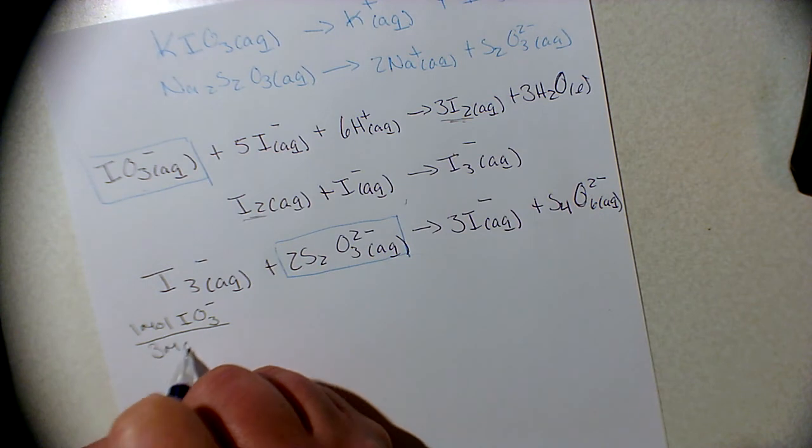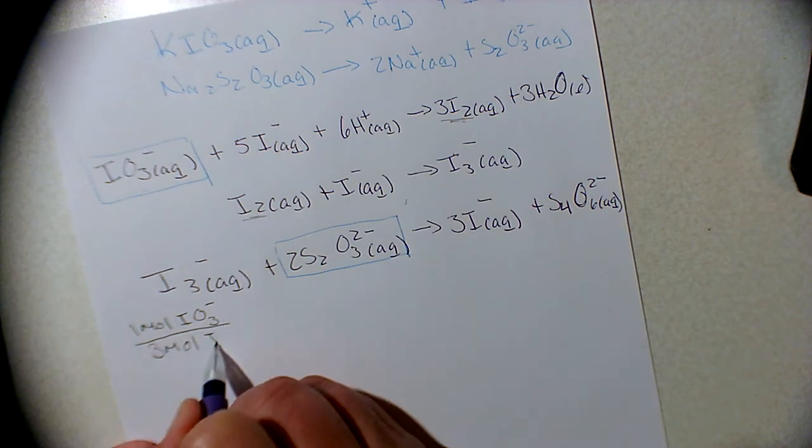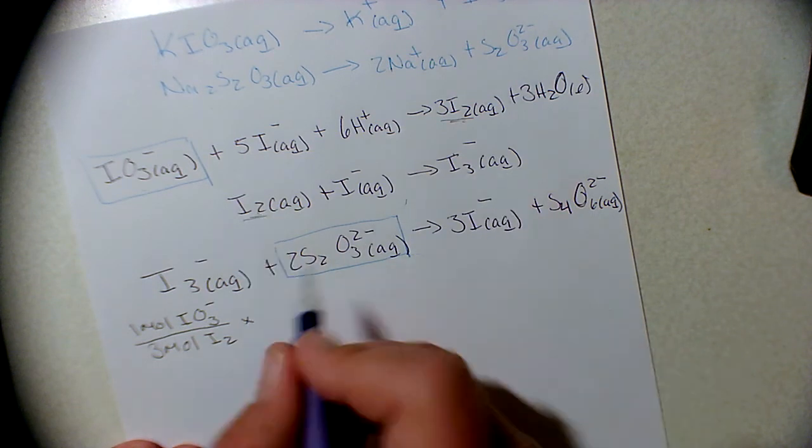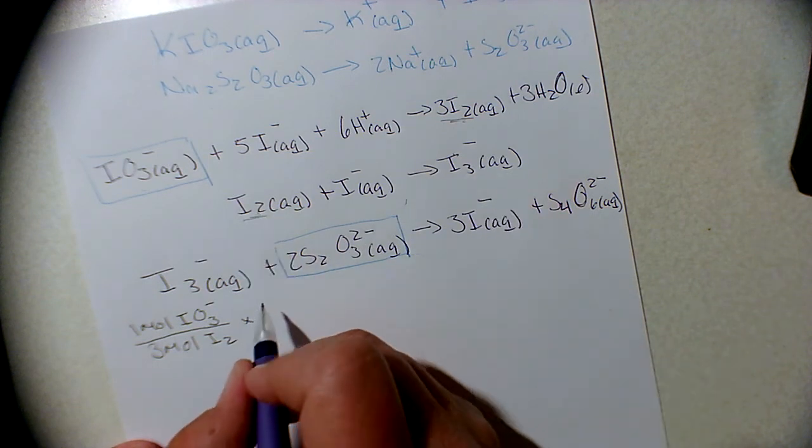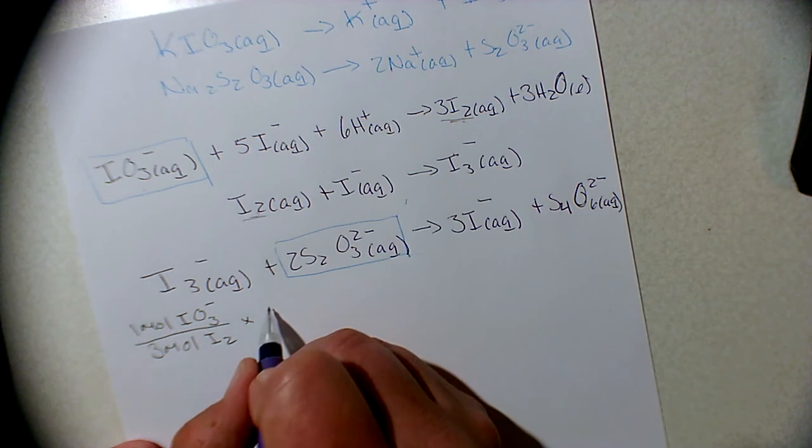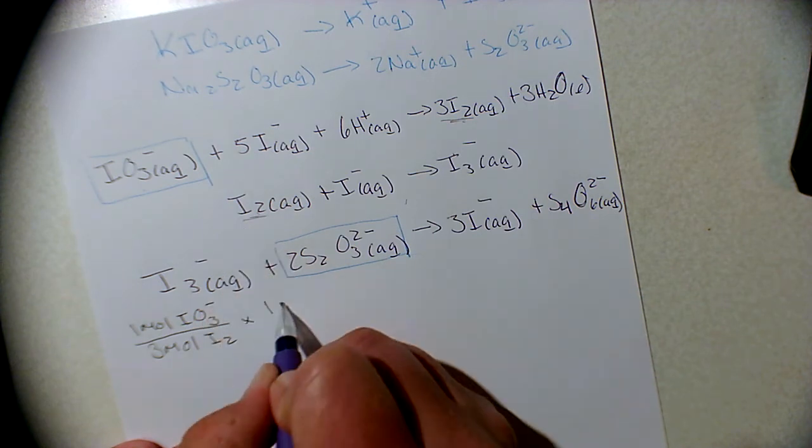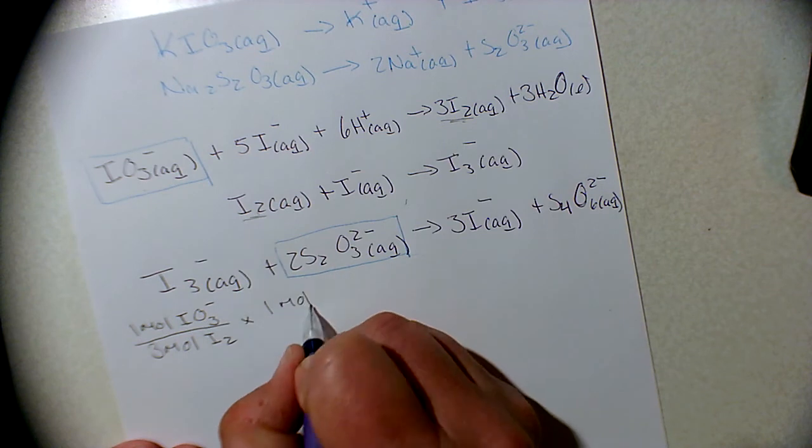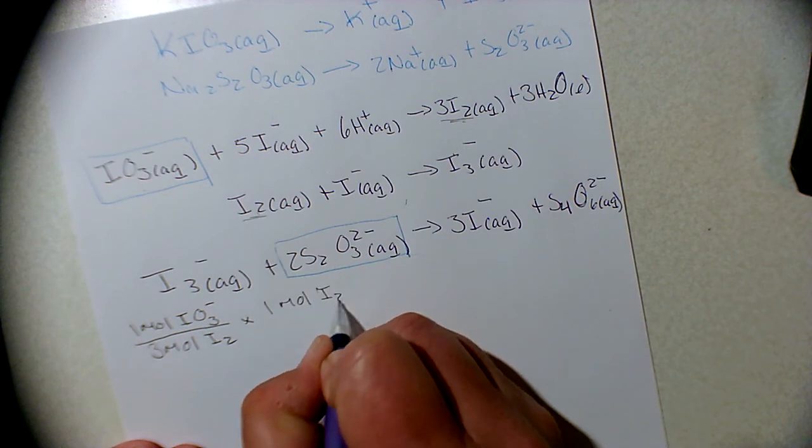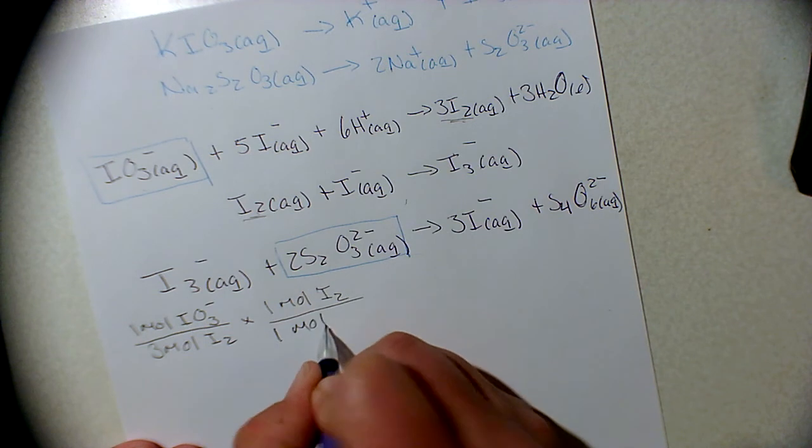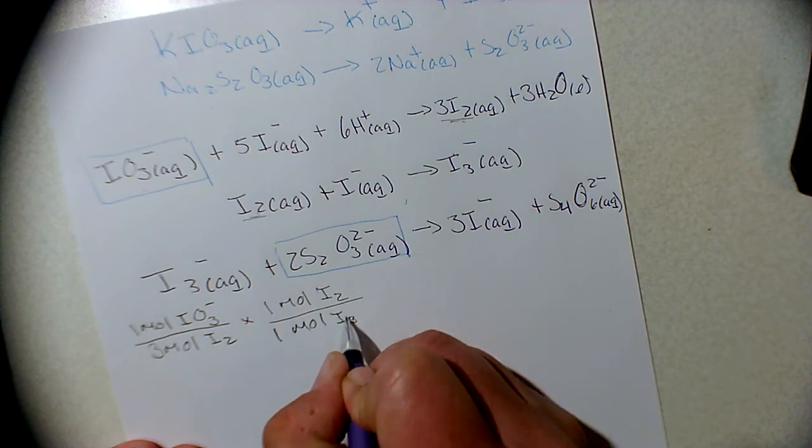Now iodine is going to go to our iodide or triiodide, sorry about that. So one mole of I2 on this side to one mole of our triiodide I3 minus.